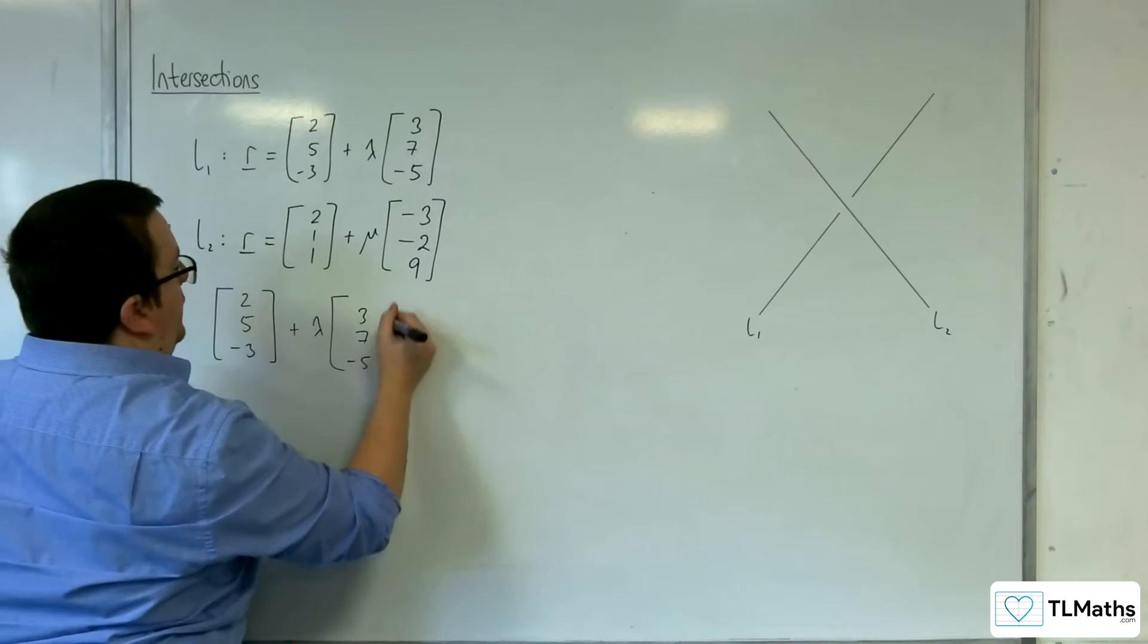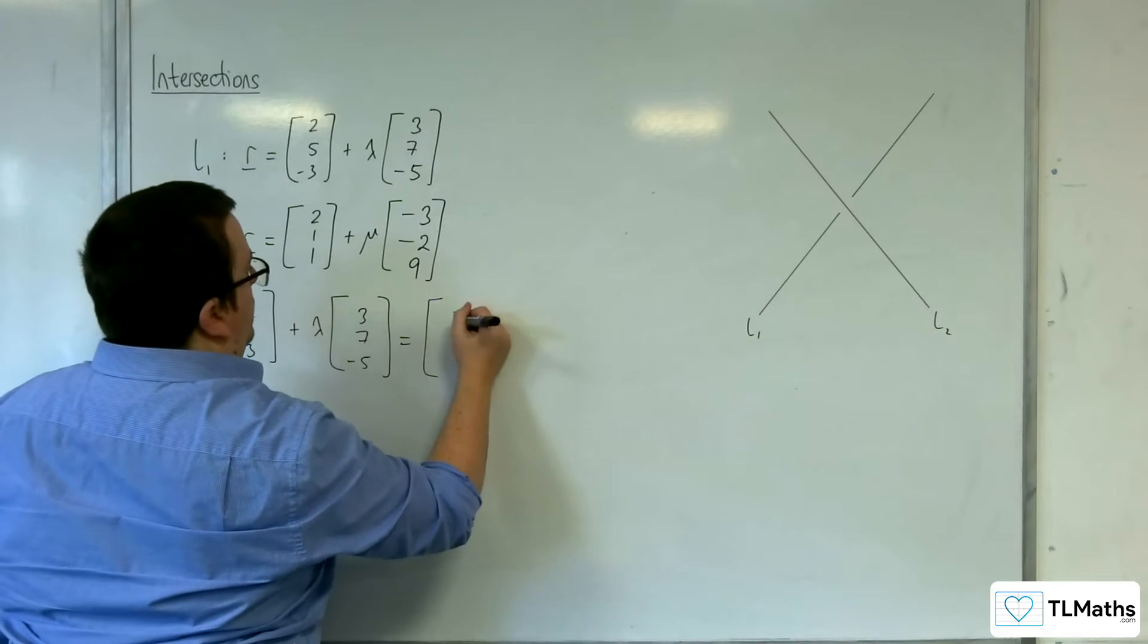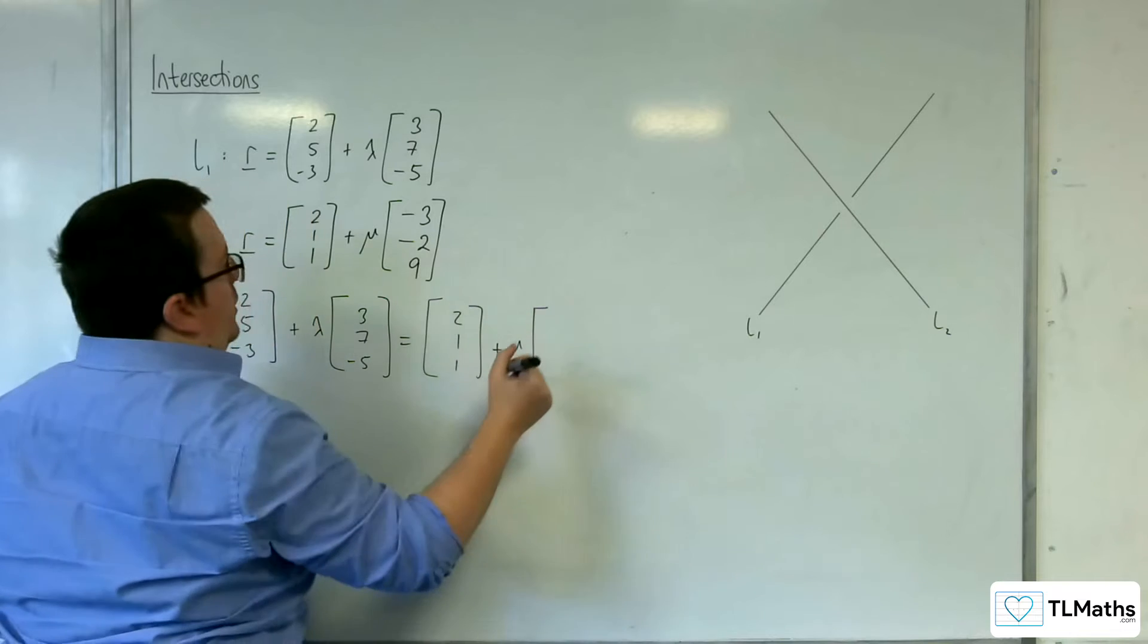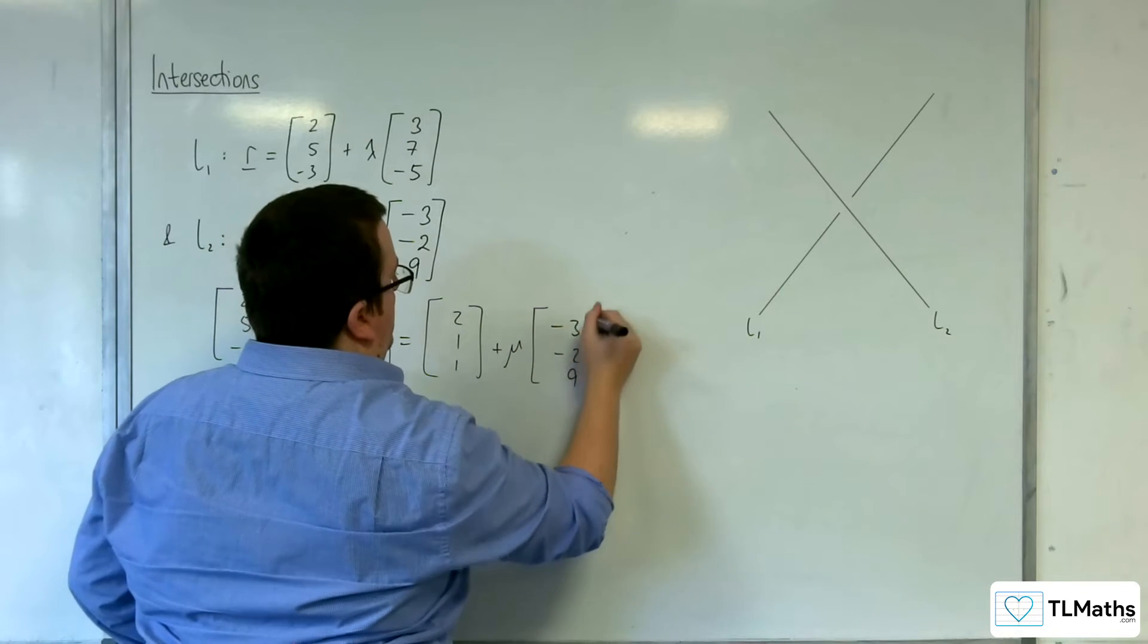So that's the first one, and we're going to put that equal to 2, 1, 1, plus mu times minus 3, minus 2, 9.